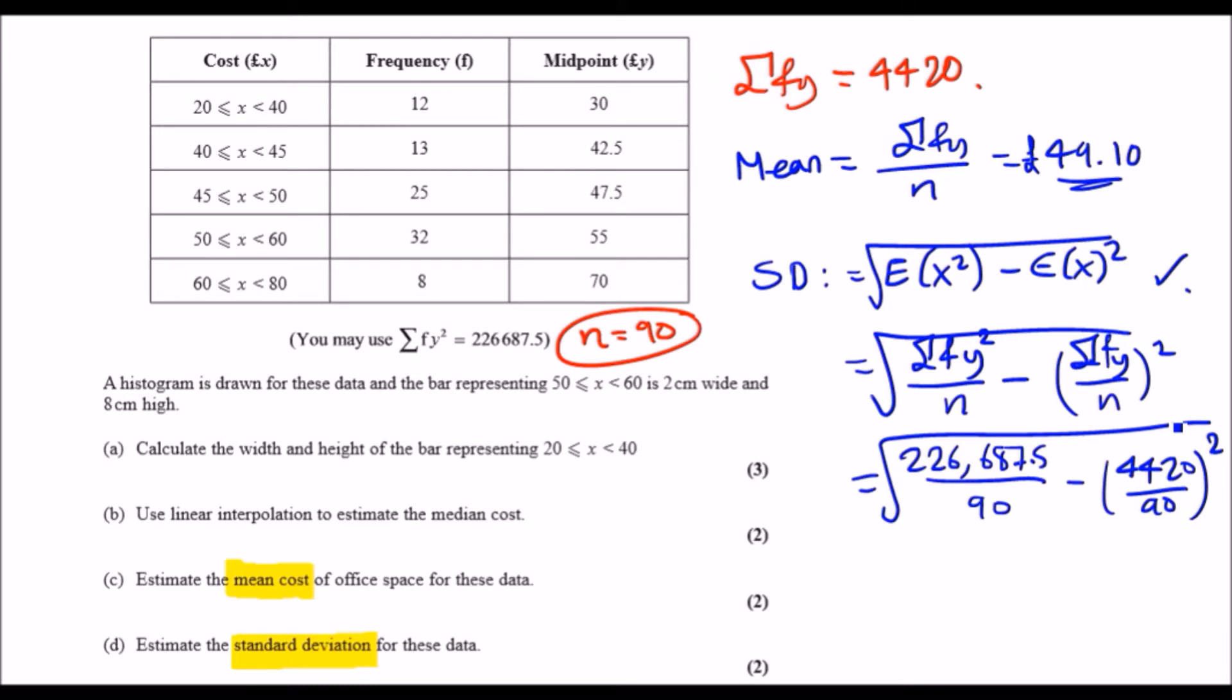So do that and you should get something decent. I'm going to quickly calculate here: 226,687.5 over 90 minus this squared. Yeah, my standard deviation was, let's see, 10.33 pounds. 10.34, go round it up obviously. £10.34. So that is the spread.